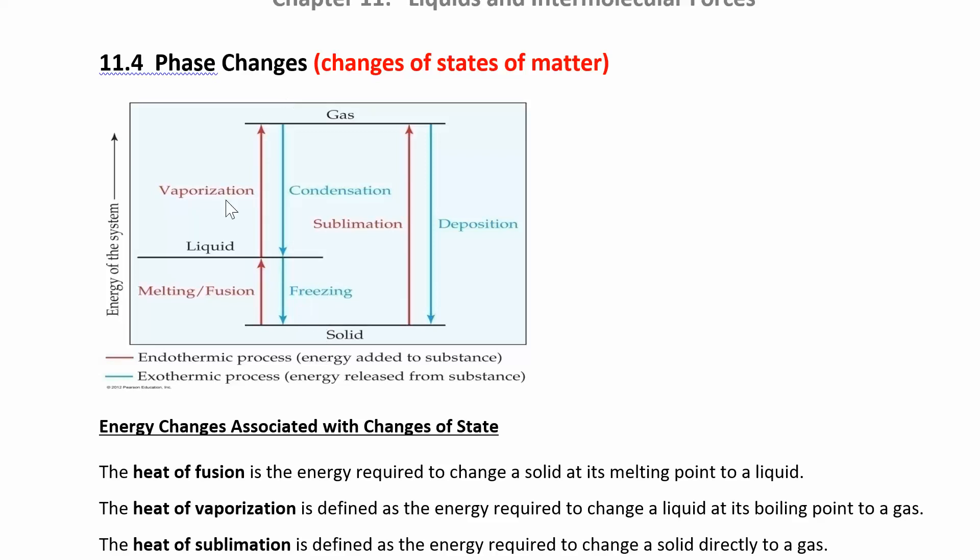Liquid to gas is vaporization. Gas to a liquid is condensation. You can also go from a solid right to a gas - that's called sublimation. You see that with dry ice, solid carbon dioxide will just sublime at room temperature. The opposite of that, when you go from gas to a solid, that's called deposition.